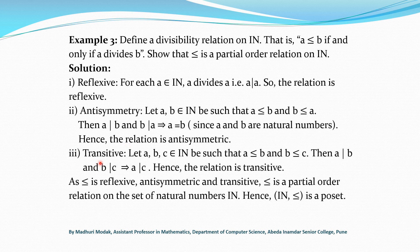For transitivity, we take three numbers A, B, C in N such that A precedes B and B precedes C. By definition, A divides B and B divides C, which implies A divides C, meaning A precedes C. So the relation is transitive. As the relation is reflexive, antisymmetric and transitive, it is a partial order relation on N. Hence N together with the divisibility relation is a poset.